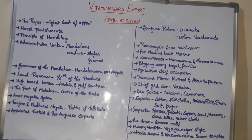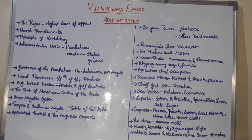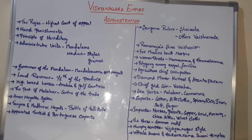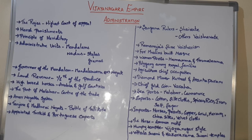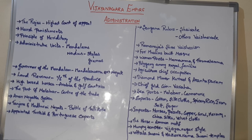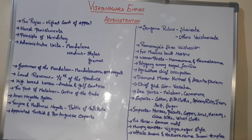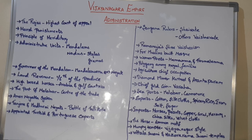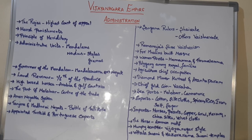The Vijayanagara kings patronized music and dance, giving great importance to the fine arts. The Devadasi system was also based on dance. They patronized the great musician and composer Purandardasa in their court.